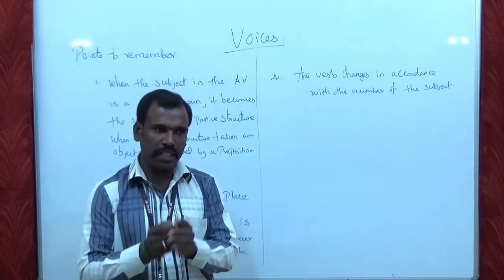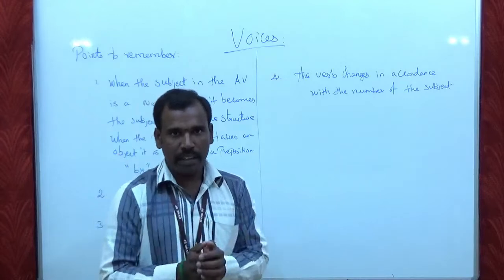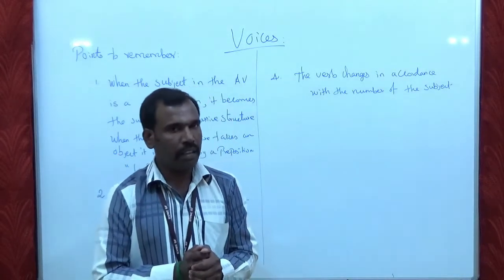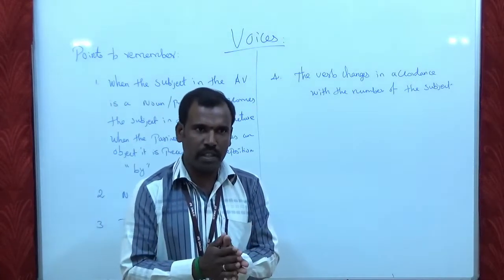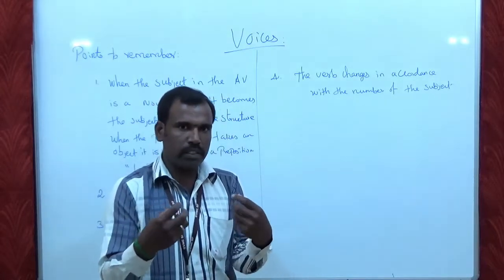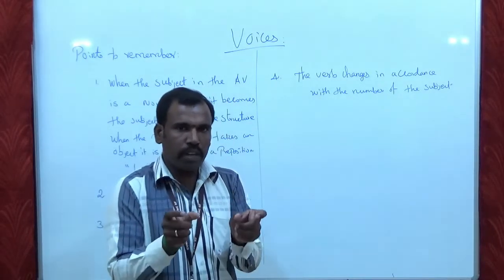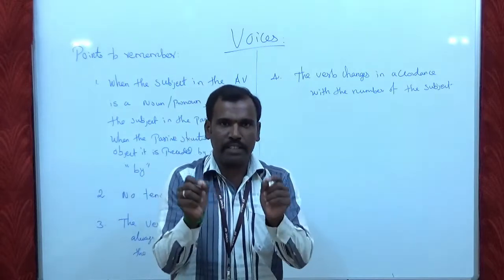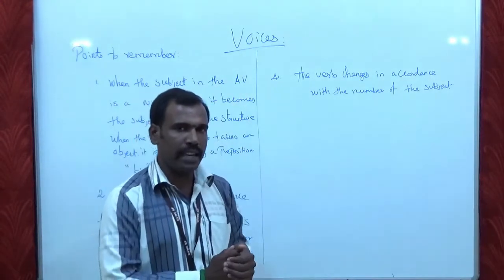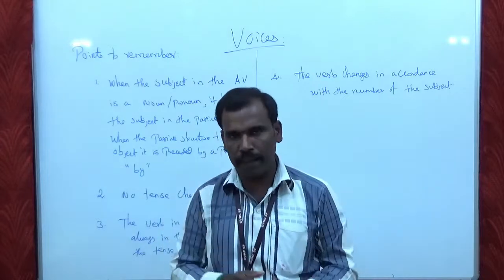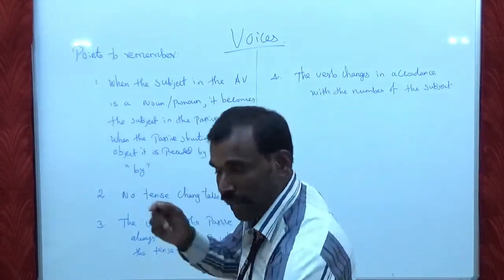In English, sentences can be divided into two types: one is Active and another one is Passive. When we use English, we write Passive Sentences too. For that, we have to understand how to frame Passive Forms.